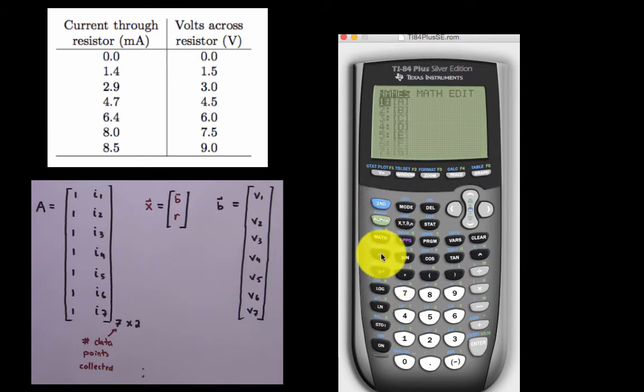First, let's go to the matrix button and we'll edit the matrix A by declaring it a 7 by 2 matrix.